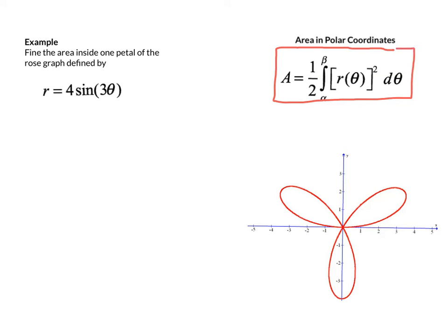So we're going to take one half the integral r squared d theta from alpha to beta. Those are the bounds as functions of theta.